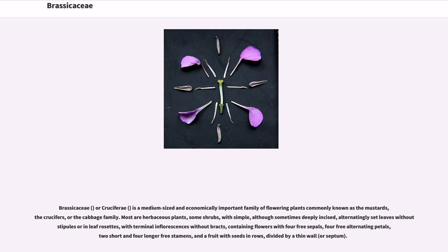Most are herbaceous plants, some shrubs, with simple, although sometimes deeply incised, alternatingly set leaves without stipules or in leaf rosettes, with terminal inflorescences without bracts, containing flowers with four free sepals, four free alternating petals, two short and four longer free stamens, and a fruit with seeds in rows, divided by a thin wall or septum.